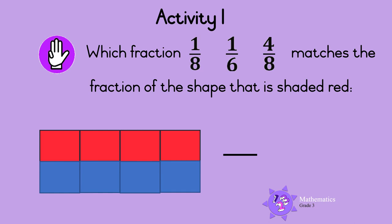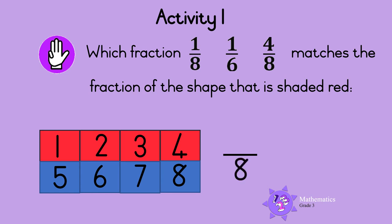Last one. How many equal parts is the shape made up of in total? Let's count them: 1, 2, 3, 4, 5, 6, 7, 8. So this shape is made up of 8 parts. We write 8 at the bottom of the fraction like this.